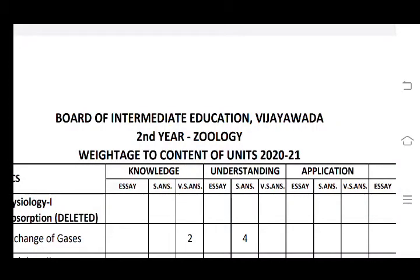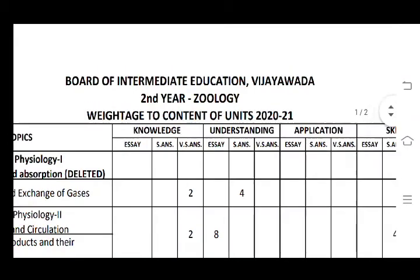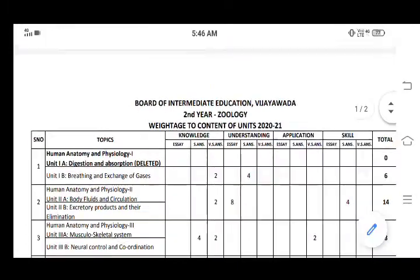Hi friends, welcome back to our channel. So friends, today's topic is for second year — the red jiu chaser, meaning a 30% syllabus reduction. So based on the new blueprint, we are going to prepare a wall for the IP exam. You can go on topic; let's start with the first unit.